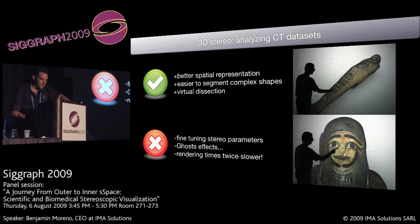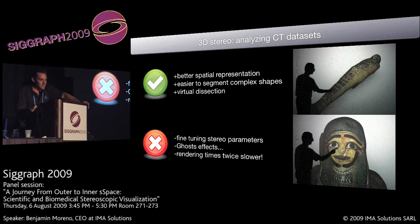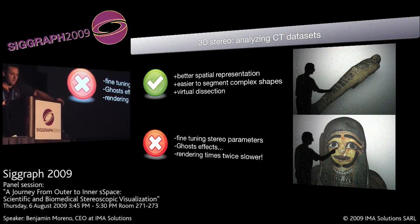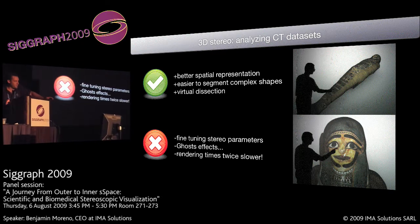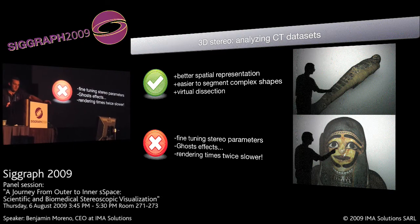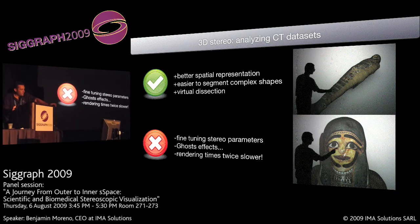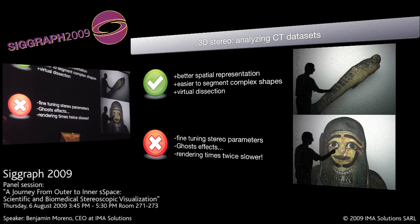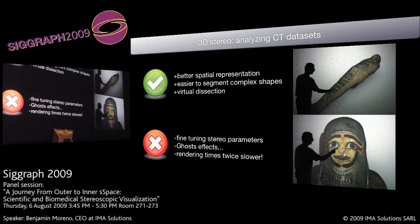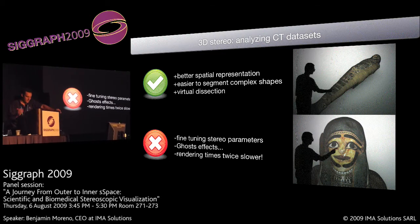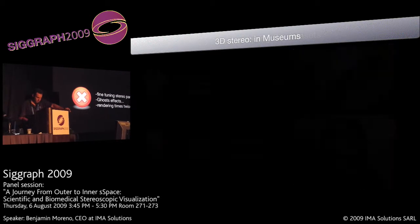The bad ones: you have to really take care about fine-tuning stereo parameters to not get ghosting effects. And of course, rendering times are twice slower, because you have two eyes to render — the left and the right — so that's twice slower to render.